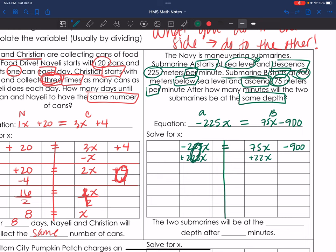That zeroes out. Sorry, I forgot to draw my horizontal line. 75 plus 225 equals 300. And it's positive because they're the same signs. Bring down that negative 900. But don't you guys notice how there's nothing on the left side now? I can't have that. I can't have zero on the left side with two terms on the right side.